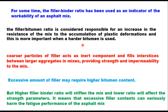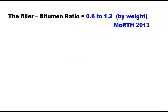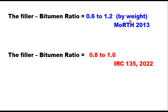Because of this reason, the filler-bitumen ratio is suggested to be in the range of 0.6 to 1.2 by various references. But a recent document, IRC 135:2022, suggests a narrow range of 0.8 to 1.0 to control rutting and fatigue.